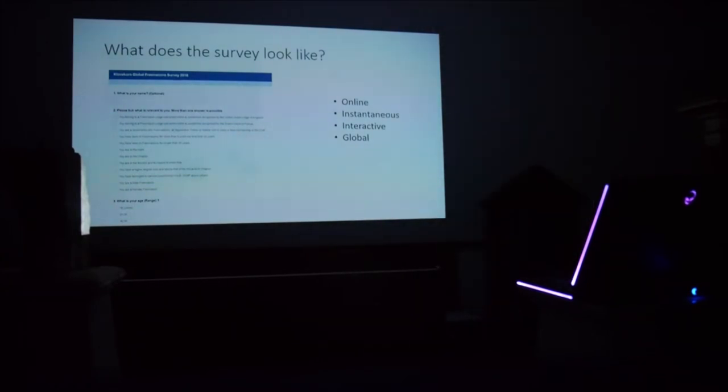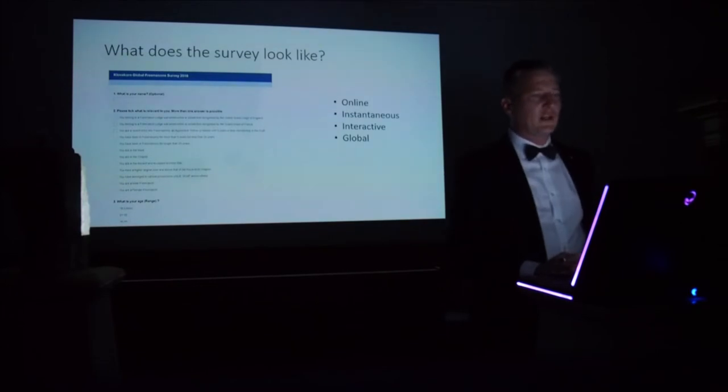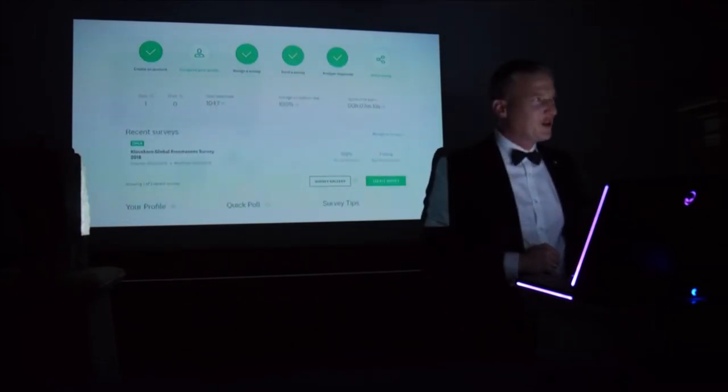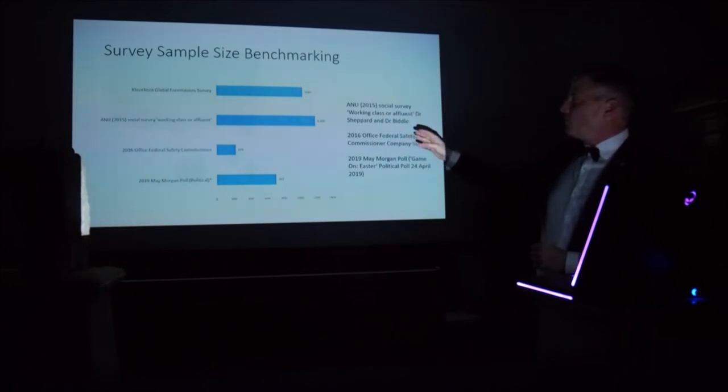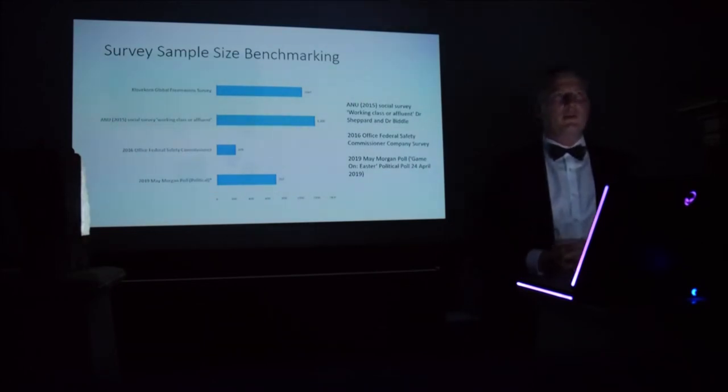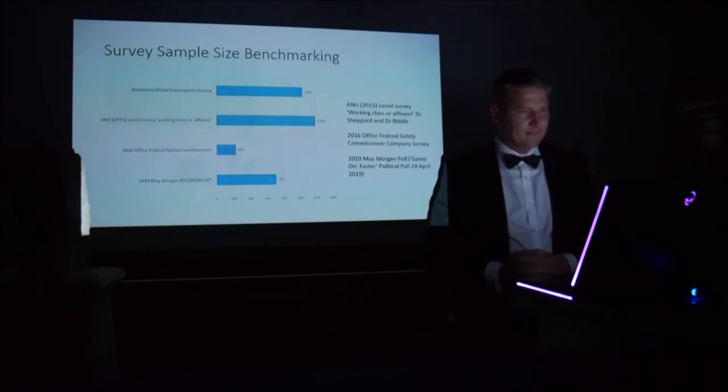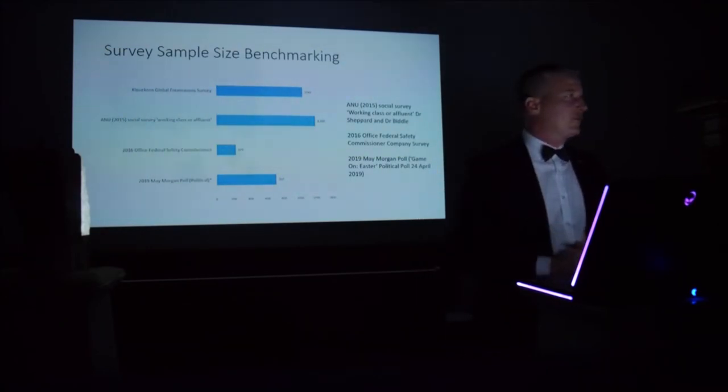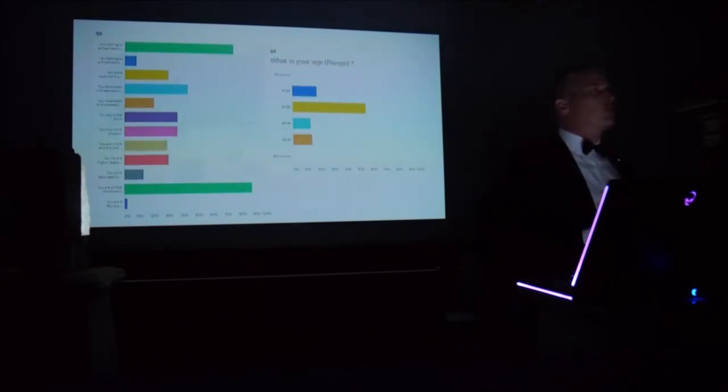What does it look like? It's an online survey. It's instantaneous, interactive, and global. So you basically go online and tick corresponding questions. It's very easy to do. I had 1,047 brethren take part in the survey from all sorts of different places from around the world. And you're probably wondering, is that large, is that small? The Klovekorn Global Freemason Survey is roughly in line with the Australian National University Social Survey of 2015, the 2016 Office of the Federal Safety Commissioner audit, and the recent Morgan Poll political survey of about 707. So 1,047 is a reasonably sized survey so that we can get some confidence about these numbers.